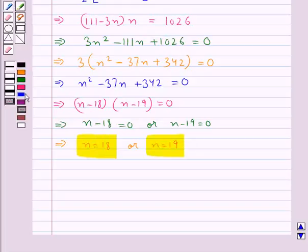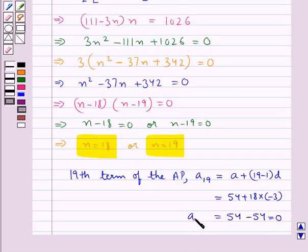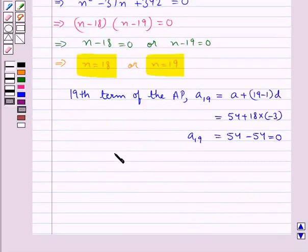Now let's find out the 19th term of the AP, which is given by a₁₉ equals a + (19-1)d. Putting the values of a and d, we get 54 + 18(-3), that equals 54 - 54 equals 0. So we get a₁₉ equals 0, that is the 19th term of the AP is 0.